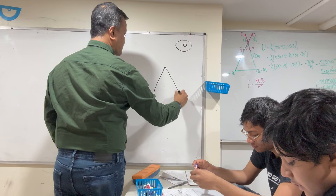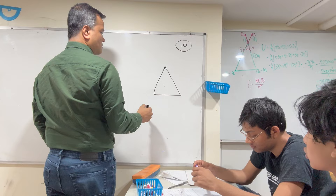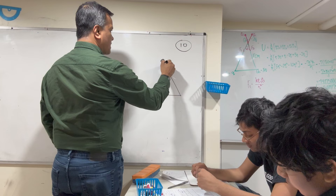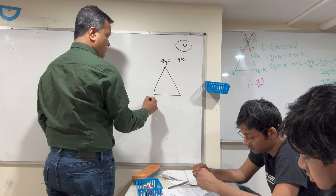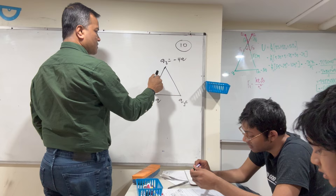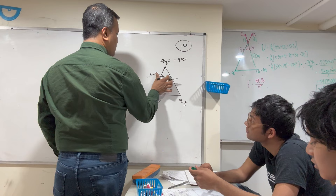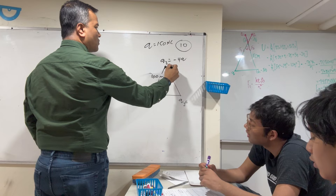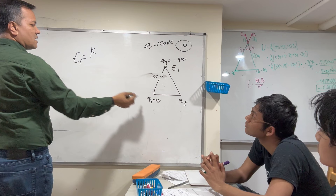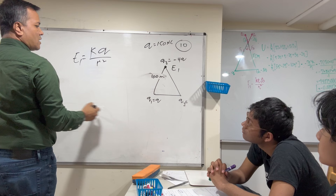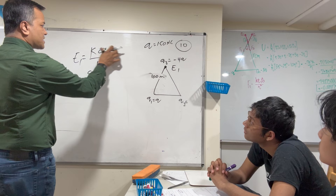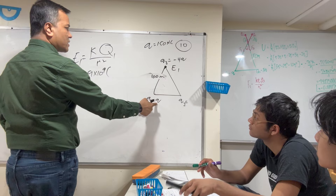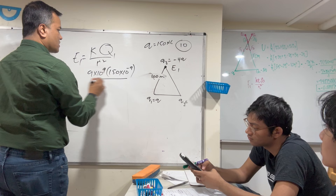Problem number ten: Use the diagram to find the electric field exerted by charge one on charge three. Charge one is minus 4q and charge three is q. Q is 150 nanocoulombs. The distance is 100 meters. E1 at Q3 = k·Q1 / r² = (9 × 10⁹) × (150 × 10⁻⁹) / (100)².